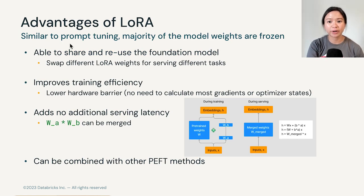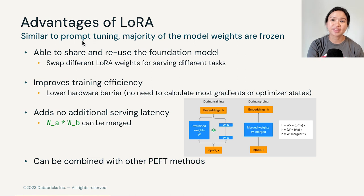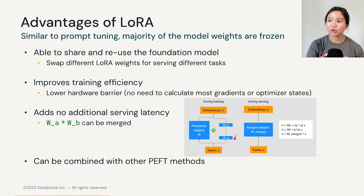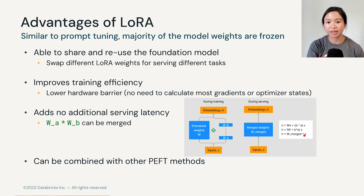In a nutshell, LoRA — just like prompt tuning — locks up or freezes the majority of the model weights. You can share or reuse the same foundation model. You can improve training efficiency since you don't have to compute most gradients or optimizer states. It also adds no additional serving latency because we can merge WA and WB.